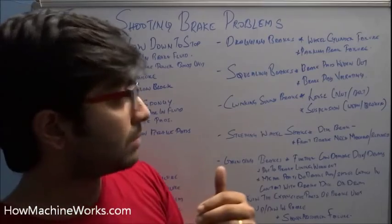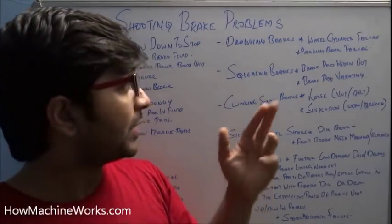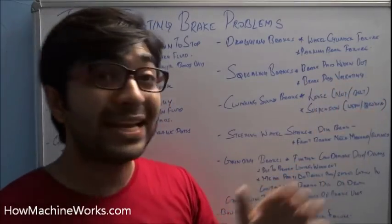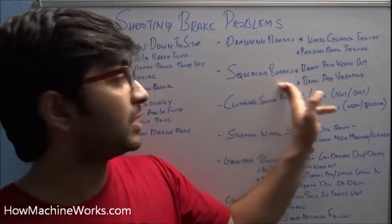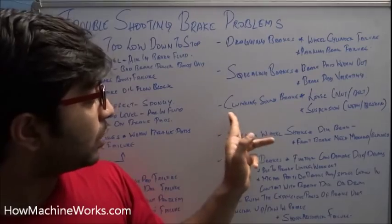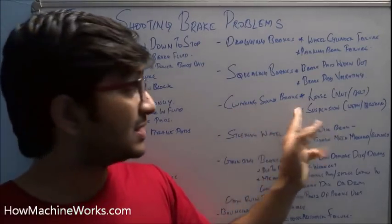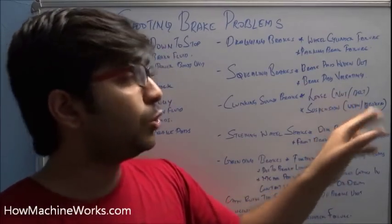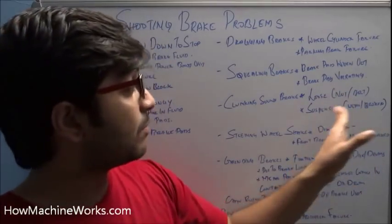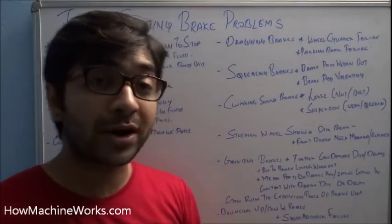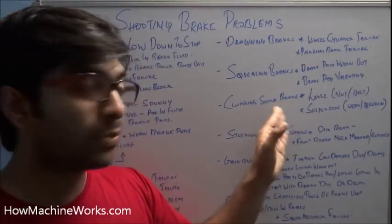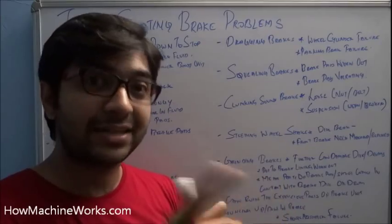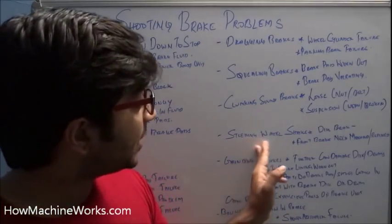The eighth problem is squealing brakes — a high-frequency squeal when you apply the brake. This is caused by worn brake pads or vibrating brake pads, and needs to be checked. The ninth problem is a clunking sound — a repetitive clunk from the vehicle. This is caused by loose nuts or components in the system, worn or broken suspension, or something not properly fixed that needs to be tightened.